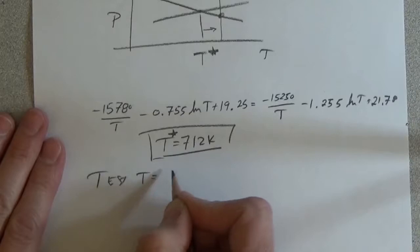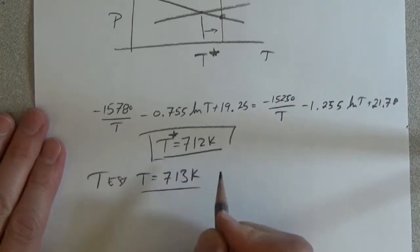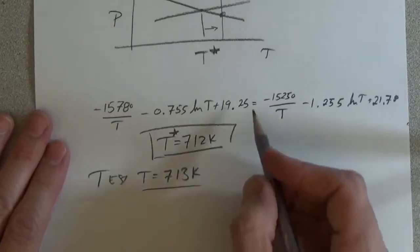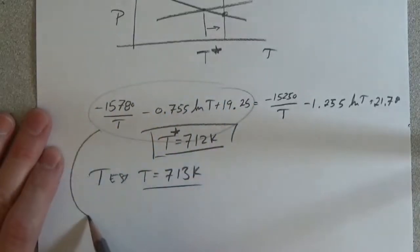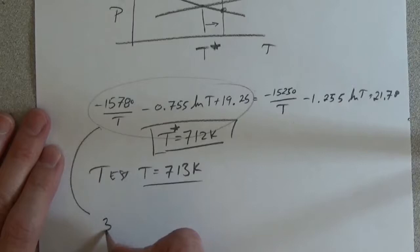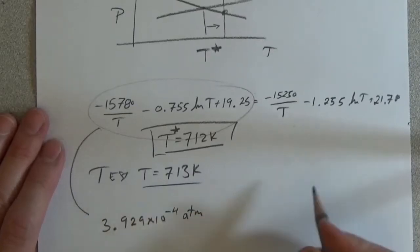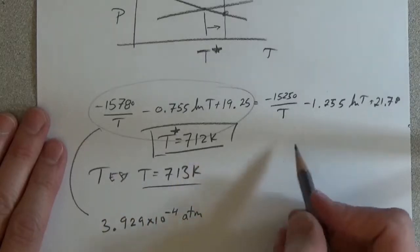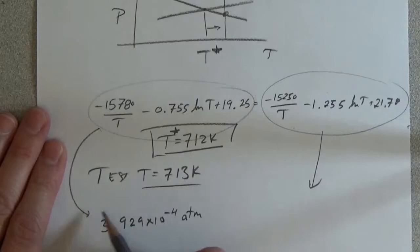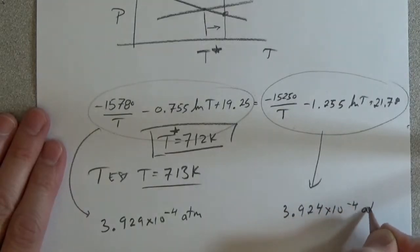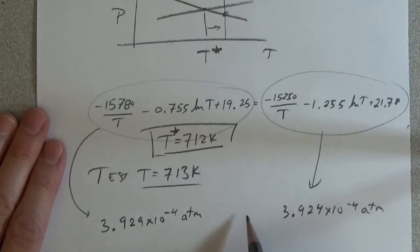Test T equals 713K. And when we do that, the left-hand side, this equation, turns out to be 3.929 times 10 to the minus 4. The right-hand side turns out to be 3.924 times 10 to the minus 4 atmospheres, which is less.